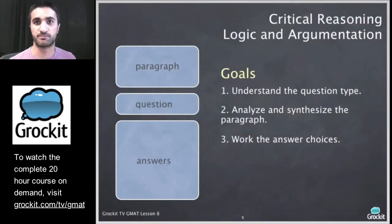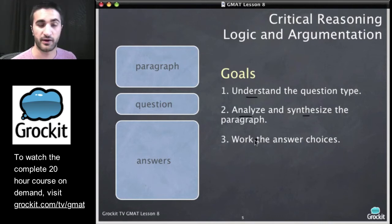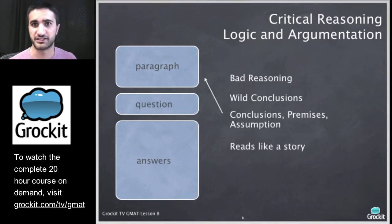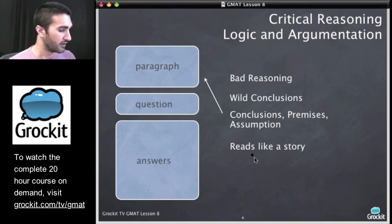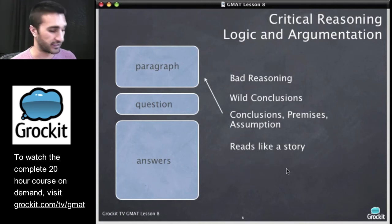Sticking to our process and practicing reading comprehension will help us answer questions quickly and accurately without spending more time than we need to. Let's jump into today's new portion and talk about critical reasoning. Our goals on any critical reasoning question are: first, understand the question type; second, analyze and synthesize the paragraph; and third, work with the answers. Remember that often the paragraphs contain bad reasoning, they make wild conclusions, and they either have a conclusion, premise, and assumption, or they read more like a story or a list of things.